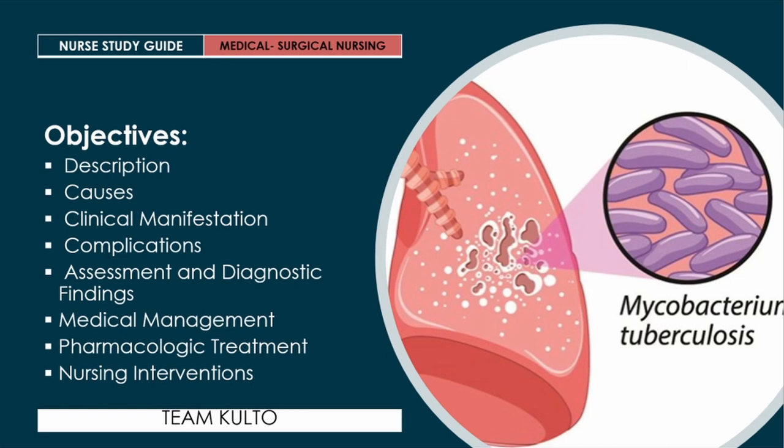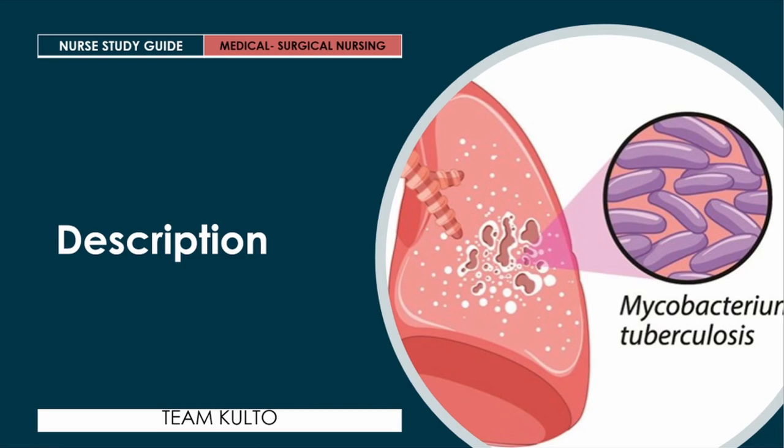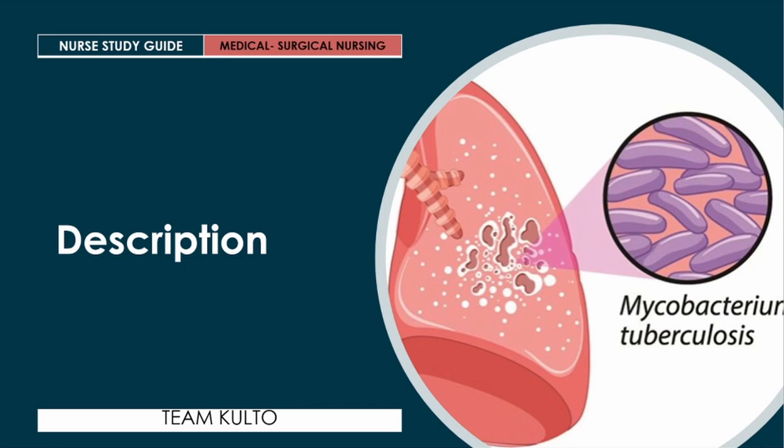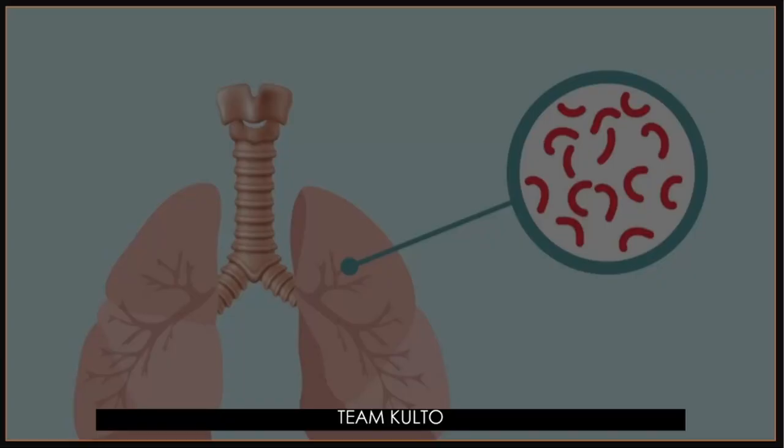First up — description. Let's define once and for all: what is tuberculosis? Tuberculosis is an acute or chronic infection caused by Mycobacterium tuberculosis. It is characterized by pulmonary infiltrates, formation of granulomas with caseation, fibrosis, and cavitation.